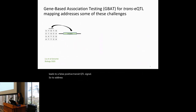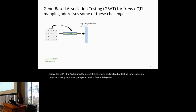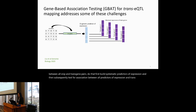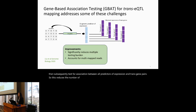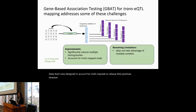To address these challenges, we previously developed a gene-based association test called GBAT designed to detect trans-effects. Instead of testing all SNP–trans-gene pairs, GBAT first builds cis-genetic predictors of expression, then tests for association between all predictors and trans-gene pairs. This reduces the number of tests by at least two orders of magnitude and improves power to detect trans-genetic effects acting through cis-effects. GBAT is also designed to account for multi-mapped reads. However, it estimates trans-effects on a context-by-context basis and doesn't leverage EQTL sharing across tissues.